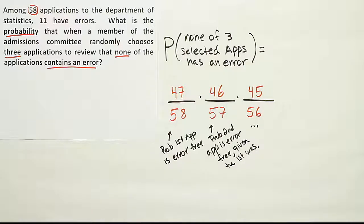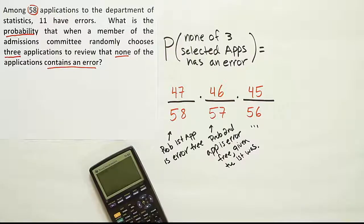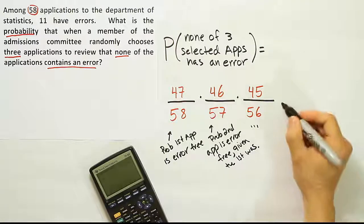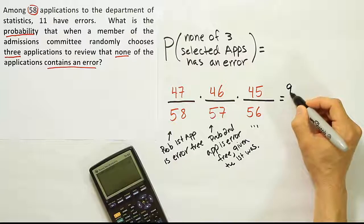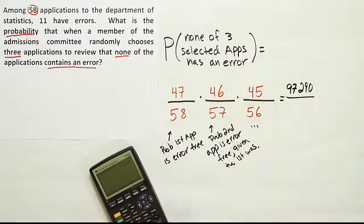The rest of that is just calculator work. We'll do 47 times 46 times 45. We get 97,290 for that top part. Then divided by 58 times 57 times 56, we get 185,136.